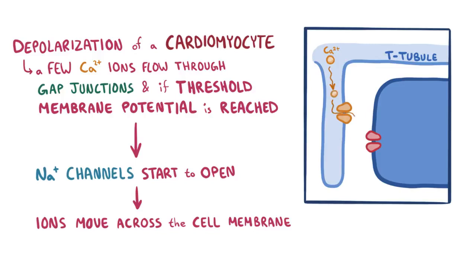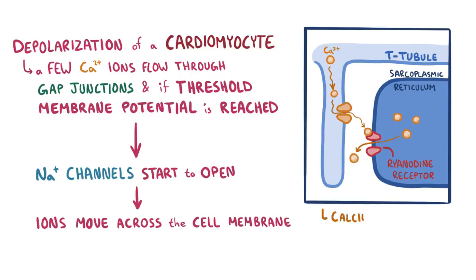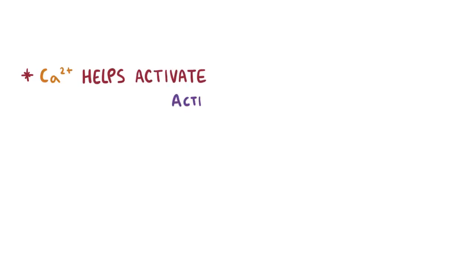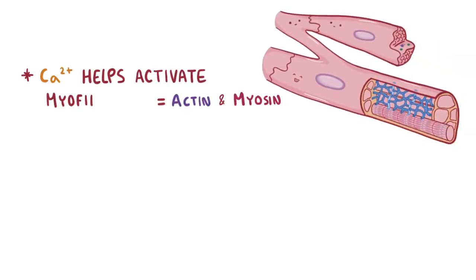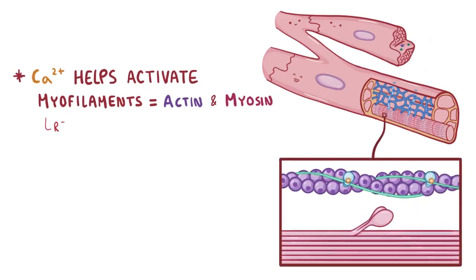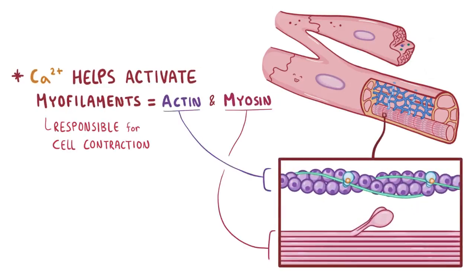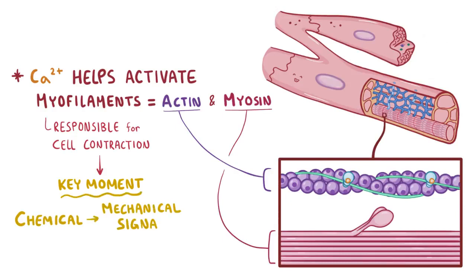Once this extracellular calcium gets inside, it binds to the ryanodine receptors on the sarcoplasmic reticulum, which releases even more calcium into the cell — a process called calcium-induced calcium release. The calcium helps activate two contractile proteins, actin and myosin, which are called myofilaments, and are ultimately responsible for cell contraction. That's the key moment when the chemical signals convert into a mechanical signal.